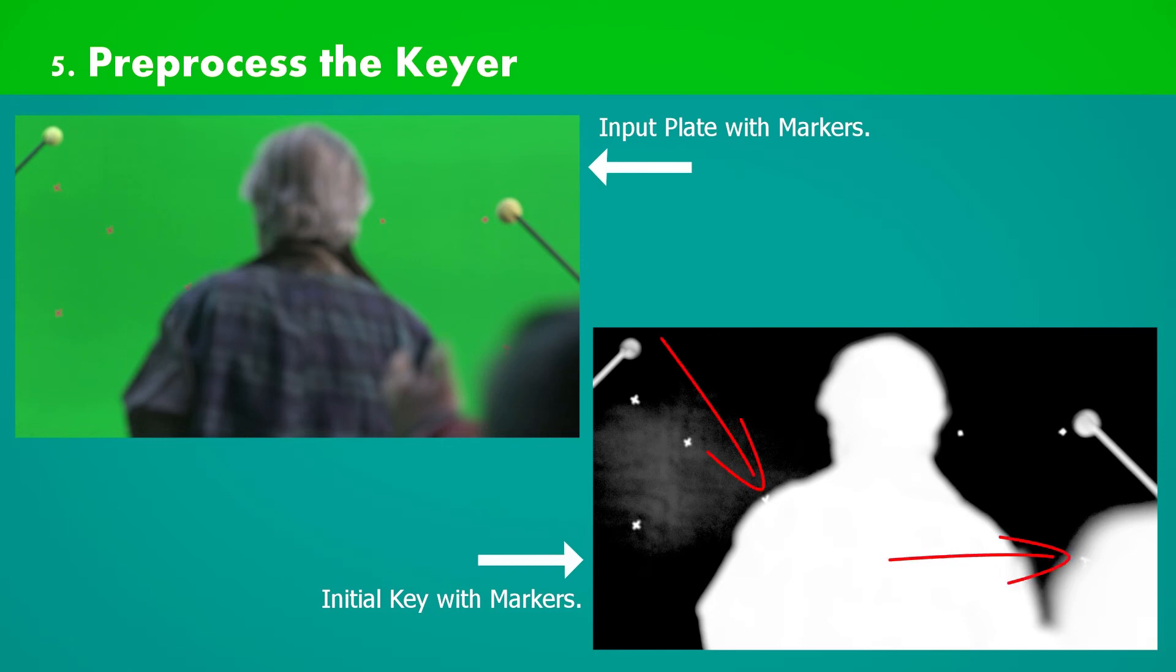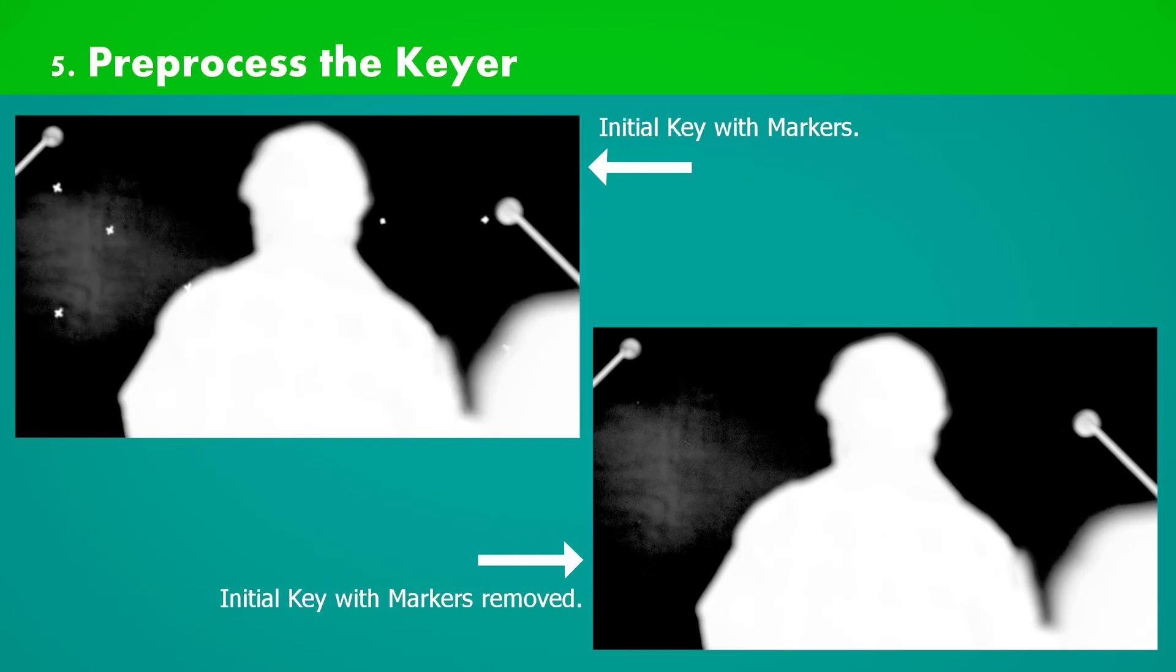Coming back to our initial matte image, here some of our markers are well integrated with our character edges. So we need marker removal process prior to applying any key. In this next image we have removed markers using industry technique. Comparing with our markers plate, it feels like they did not even exist before. This is called high quality work because every pixel matters.